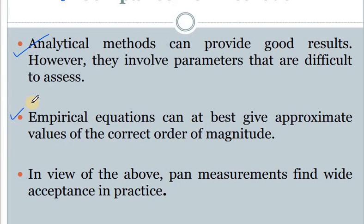Empirical equations can give approximate values for the correct order of magnitude, so they are good for getting an approximate value. However, in actual practice, pan measurements find wide acceptance and are most widely used all over the world to find out evaporation. So: analytical methods are accurate but difficult due to parameters required; empirical equations give approximate results; and pan measurements are the most widely accepted method worldwide.